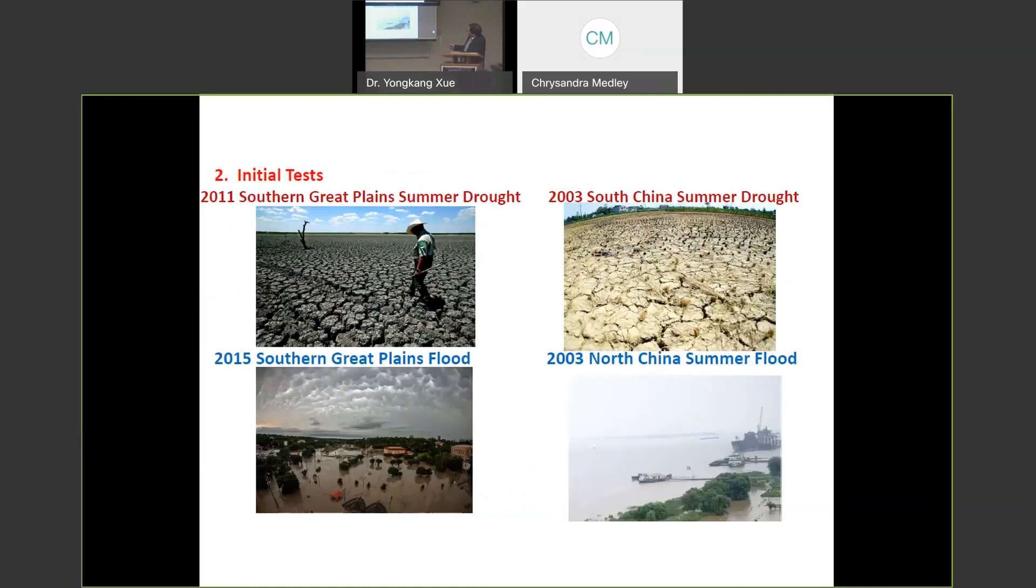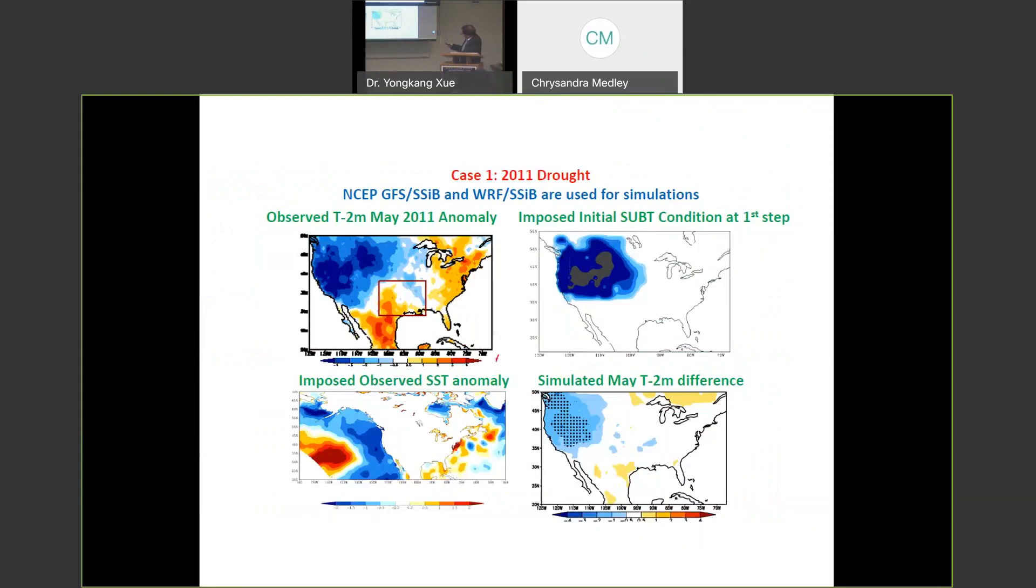Now, we based on those events, like, we did some initial tests for the 2011 South Great Plain drought, 2015 Southern Great Plain flooding, and 2003, to the south of Yangtze River was flooding, to the north was a drought. So the first case here is a 2011 drought case. So we're using both NCEP, the GFS, and also use WRF to do the simulation. So both coupled with a land surface model, Noah LSM.